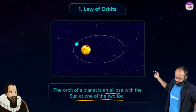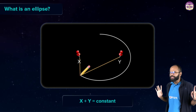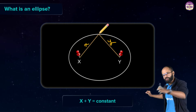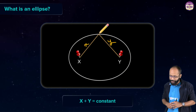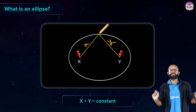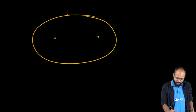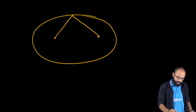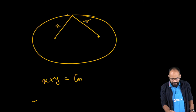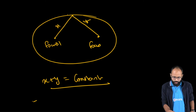Take a pencil and trace a path while keeping the thread taut. The length of the thread is constant — if one segment is x and the other is y, wherever you move the pencil, x plus y will always be constant. An ellipse is the locus of a point where the sum of distances from two fixed points (the foci) is always equal.